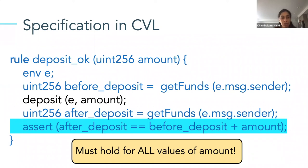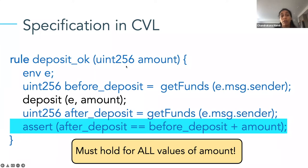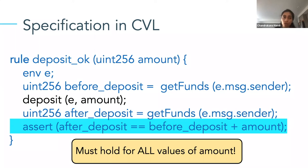You might wonder whether you can get the same guarantee from testing. The answer is yes, but it's worth remembering that amount is an unsigned 256-bit integer. If you really want exhaustive testing, you'd have to test each and every value — that's 2 to the power of 256 different values, which you obviously can't do. The Certora Prover actually guarantees this property holds for all amounts. The underlying technology is constraint solvers, which are very efficient at proving these kinds of properties without doing exhaustive enumeration.